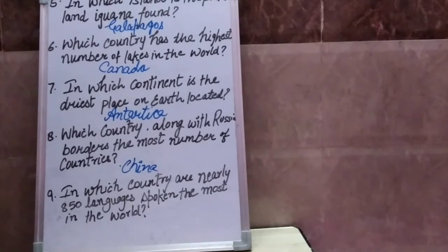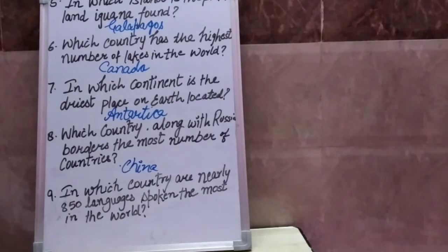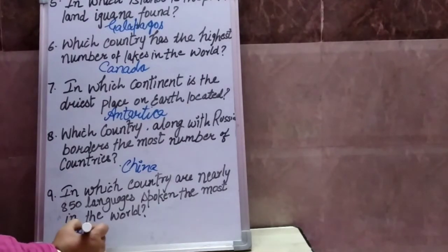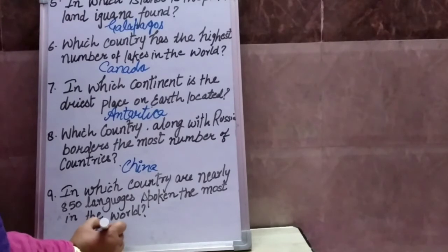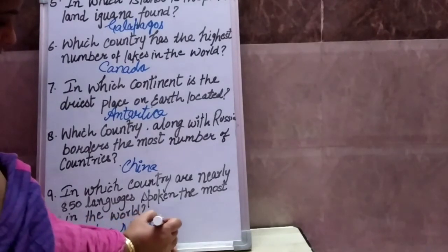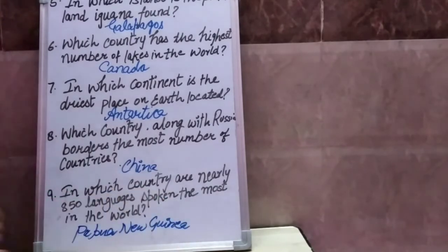Question number nine: In which country are nearly 850 languages spoken, the most in the world? Koun se desh mein lagbhag 850 languages boli jati hain? Your answer is Papua New Guinea — yeh ek aisa desh hai jahaan sabse jyada languages boli jati hain.